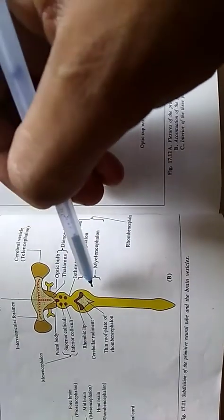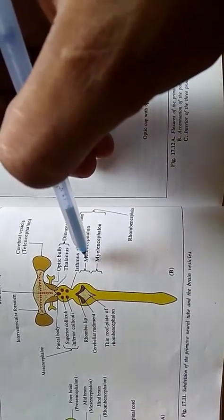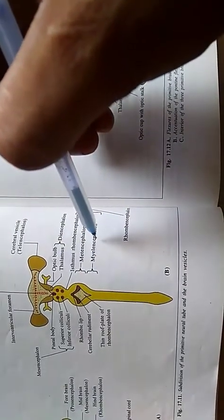The cavity of midbrain vesicle will be narrowed out to form the cerebral aqueduct. The hindbrain vesicle is divided into two parts. The metencephalon is the upper part which will lead to development of pons and cerebellum. Myelencephalon is the lower part which will lead to development of medulla oblongata.